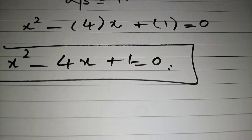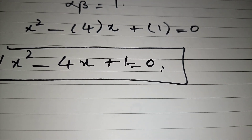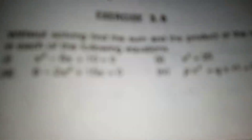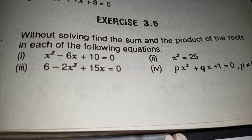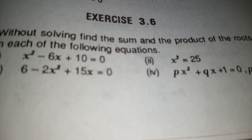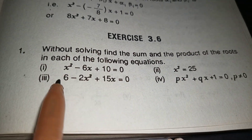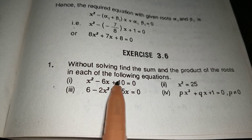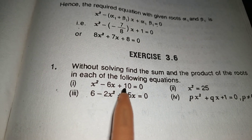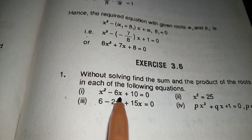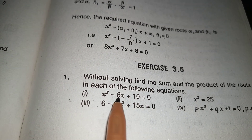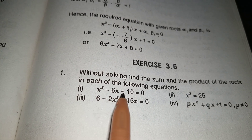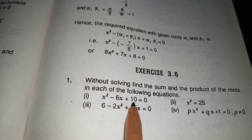Now we discuss Exercise 3.6. In question number 1, we are given: without solving, find the sum and product of the roots of each equation. For x squared minus 6x plus 10, we have a equals 1, b equals minus 6, and c equals 10. The sum of the roots is minus b over a, which is minus(minus 6) over 1, equals 6.